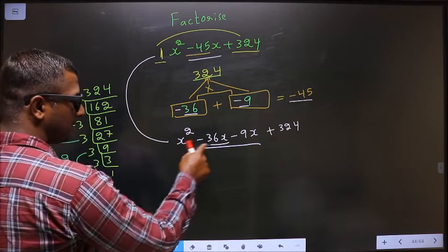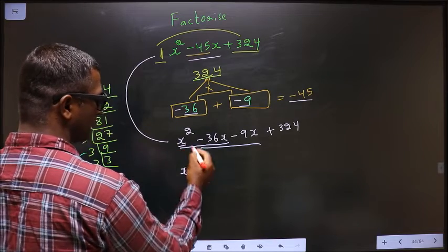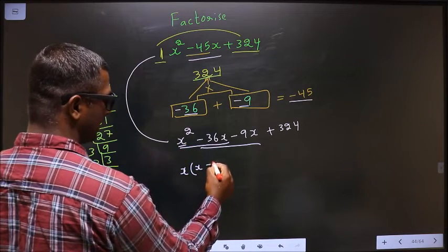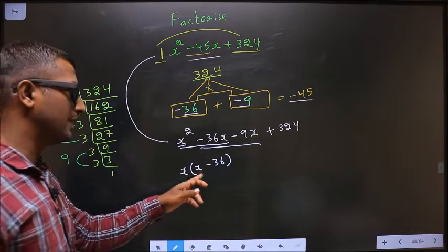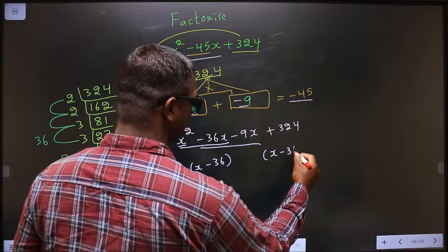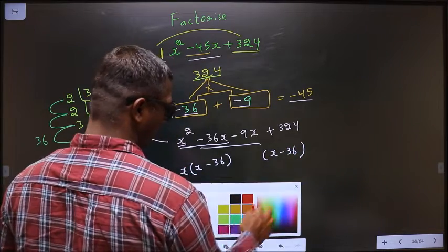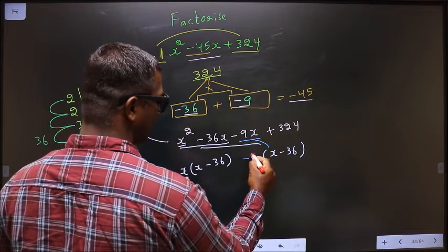From these 2, what can be taken out common is x. So here I get x and here I get minus 36. Whatever you got here, here also you should get the same thing. So from 9x, x is gone inside, so outside is minus 9.